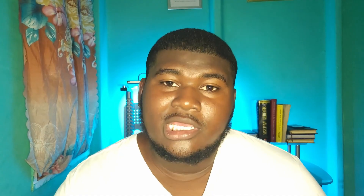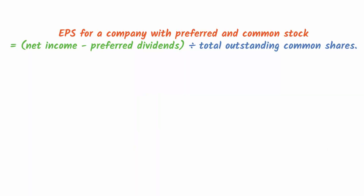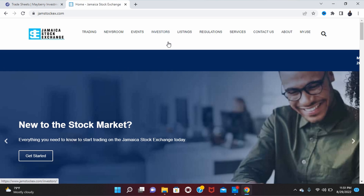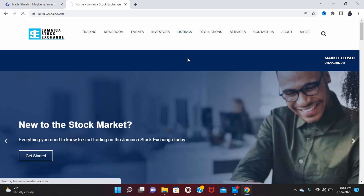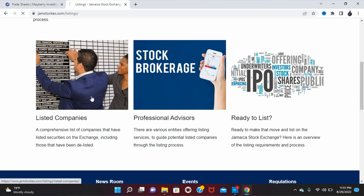If you can't find earnings per share on the income statement, here's how to calculate it: EPS equals net income minus preferred dividends, divided by total outstanding common shares. If the company has no preference shares, that part equals zero. You can find the outstanding shares on the Jamaica Stock Exchange.